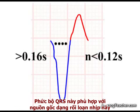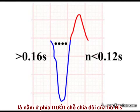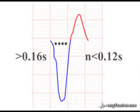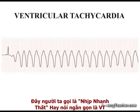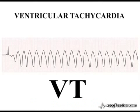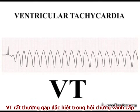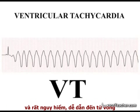This is consistent with an origin of the arrhythmia from a focus situated below the bifurcation of the bundle of His. This is ventricular tachycardia, or VT. VT is extremely common, particularly in the setting of acute coronary syndrome, and is potentially lethal.